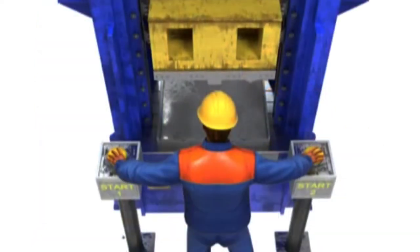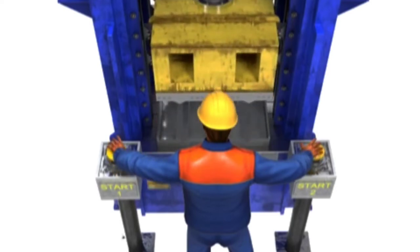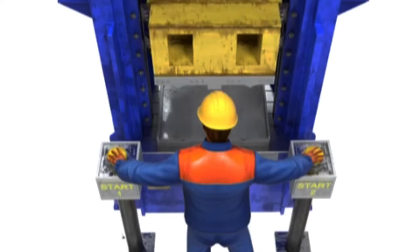Two-hand controls are an actuation device that requires the concurrent use of both hands of the operator to start a cycle. The purpose is to prevent the operator from having any part of his or her body in the work envelope of the machine during its operating cycle.